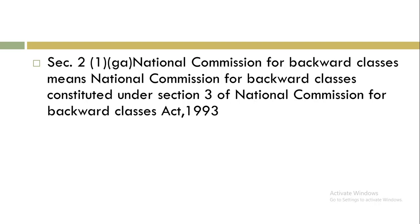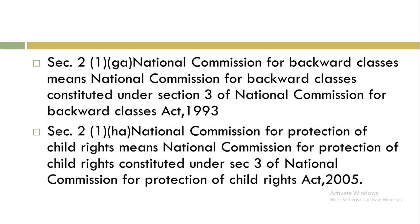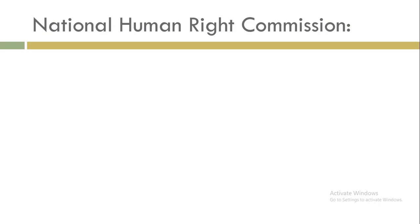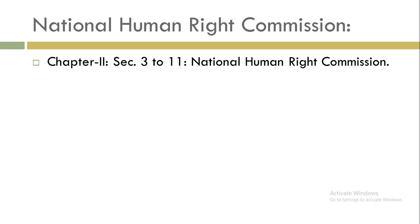Section 2(1)(G-A), added by amendment in 2006, covers the National Commission for Backward Classes — the commission constituted under Section 3 of the National Commission for Backward Classes Act 1993. Section 2(1)(G-A) also covers the National Commission for the Protection of Child Rights, constituted under Section 3 of the National Commission for the Protection of Child Rights Act 2005. The National Human Rights Commission itself is described under Section 2(E) read with Section 3.